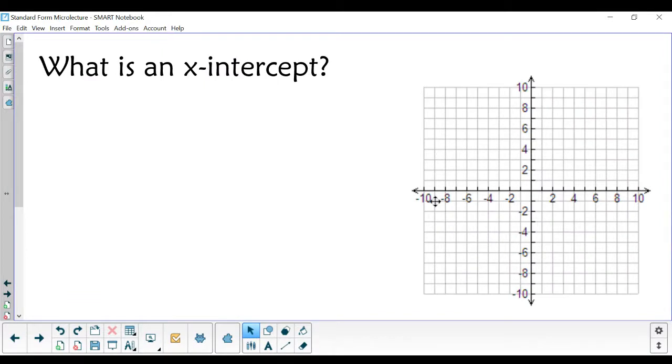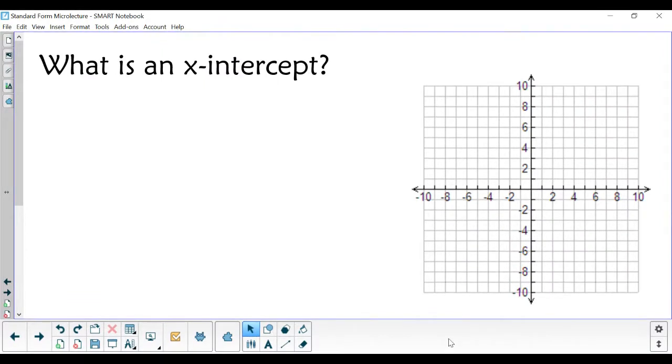To answer that question, we have to say what is an x-intercept? If we look at this graph over here, we can see an x-intercept is any point that crosses the graph at the x-axis. And if we look at all of these points that I put on this graph,